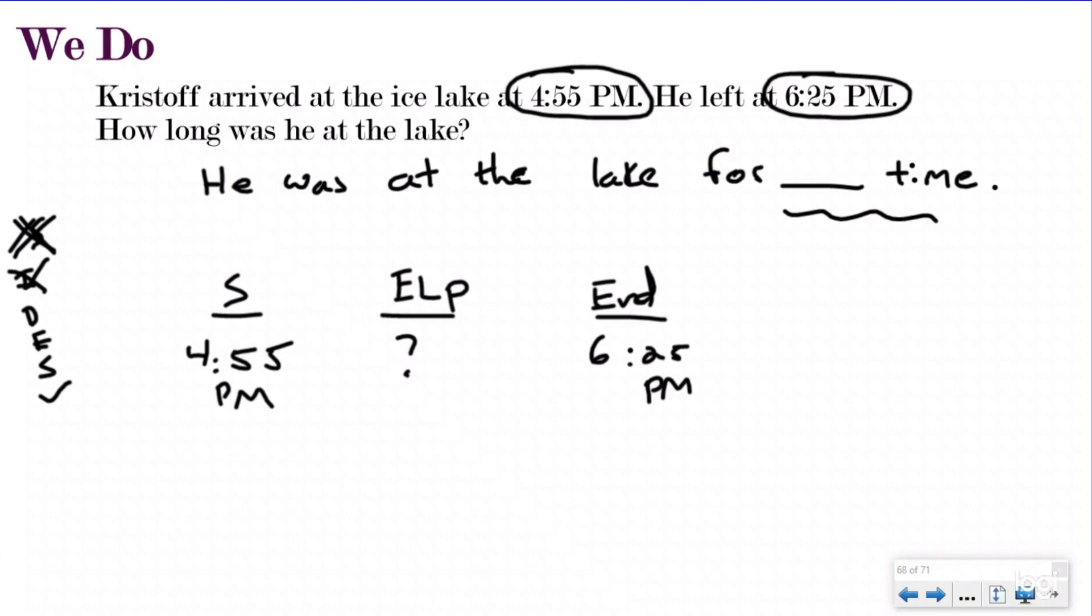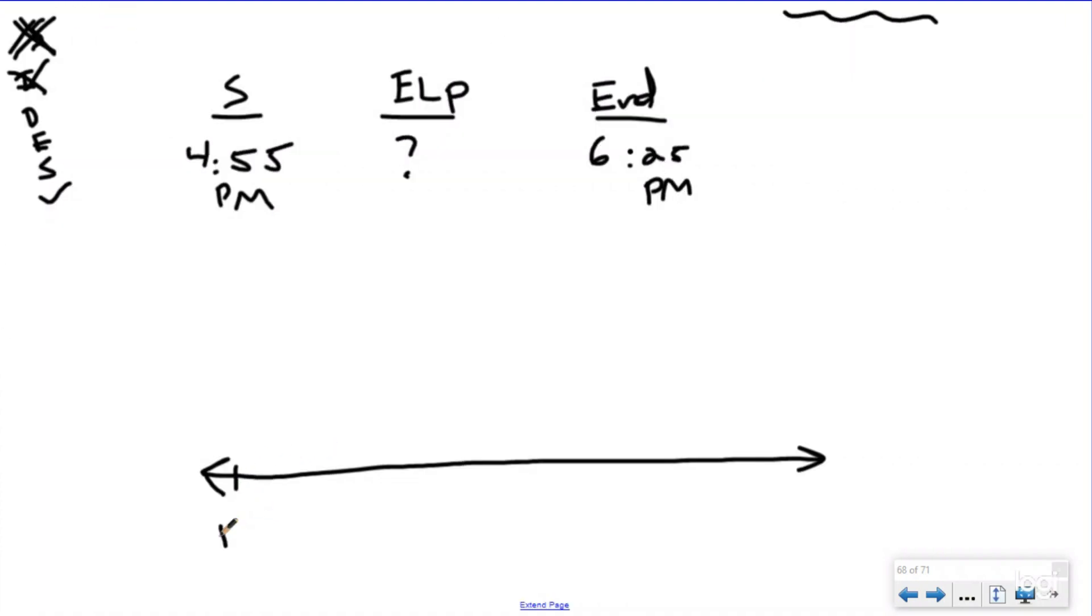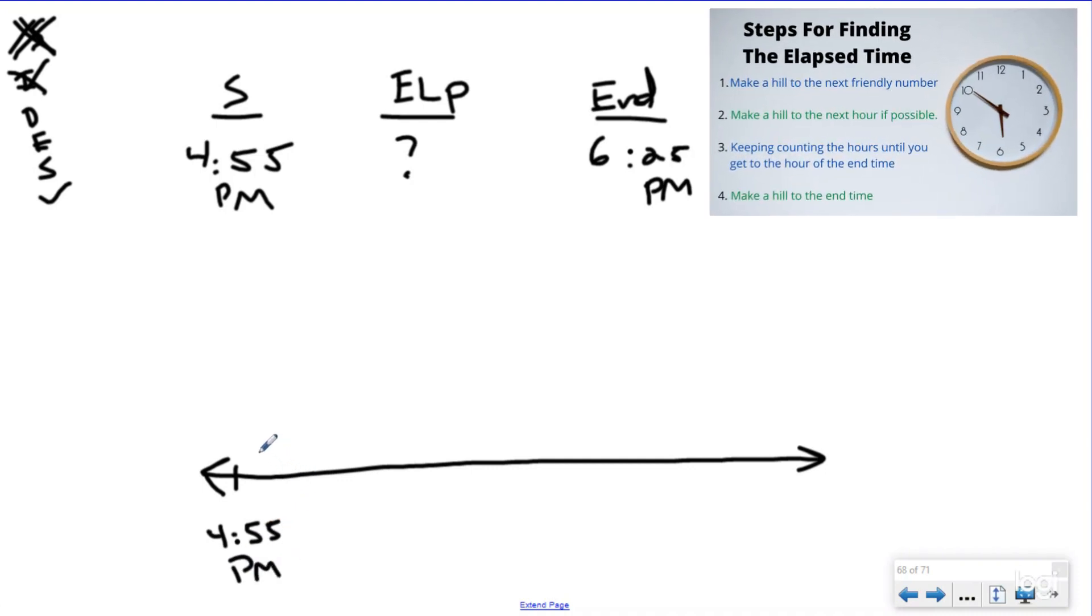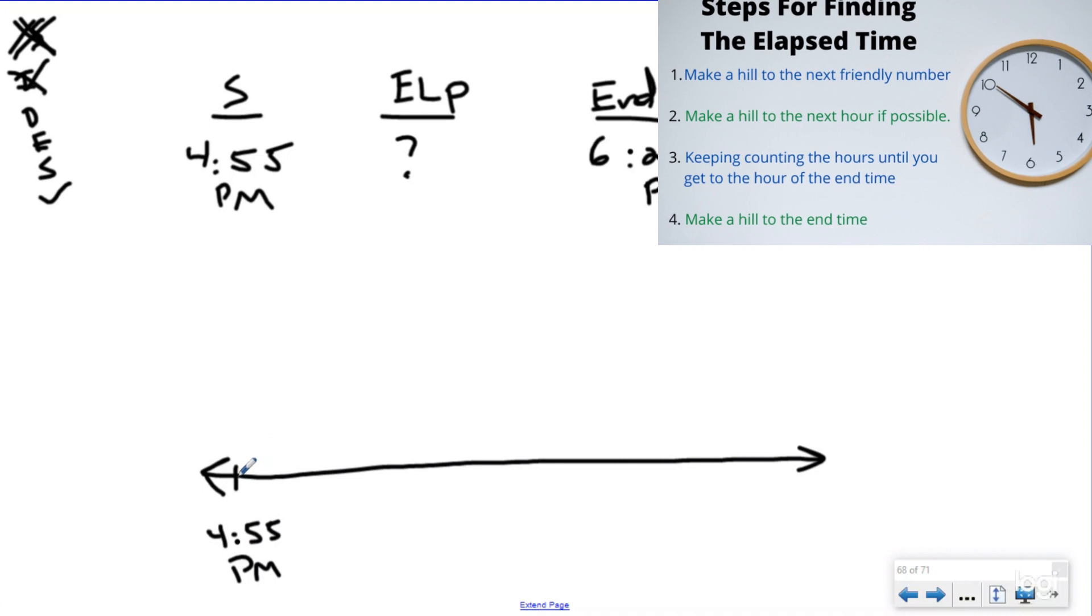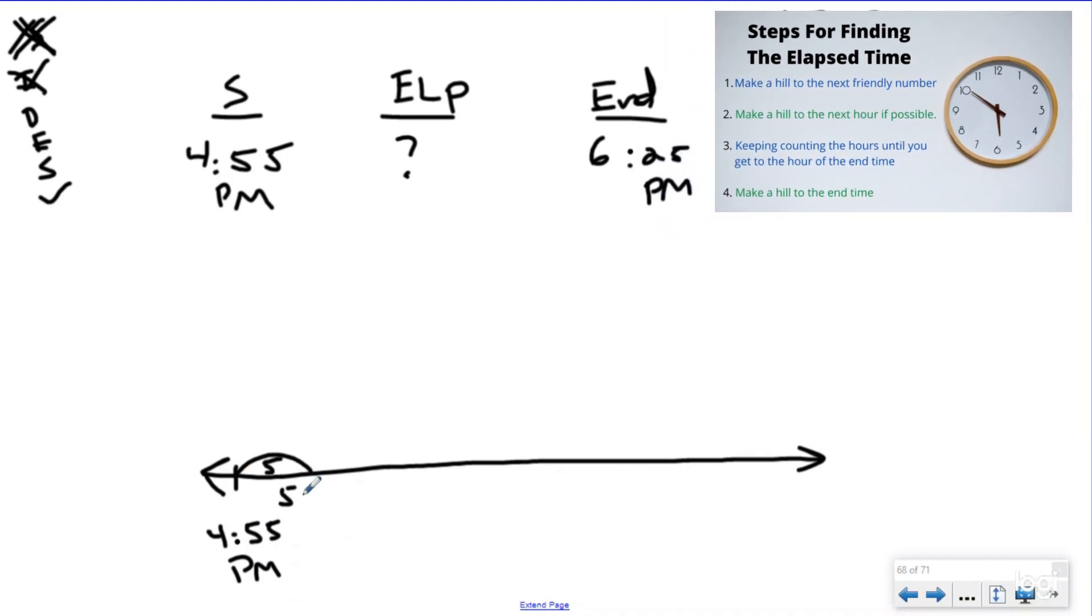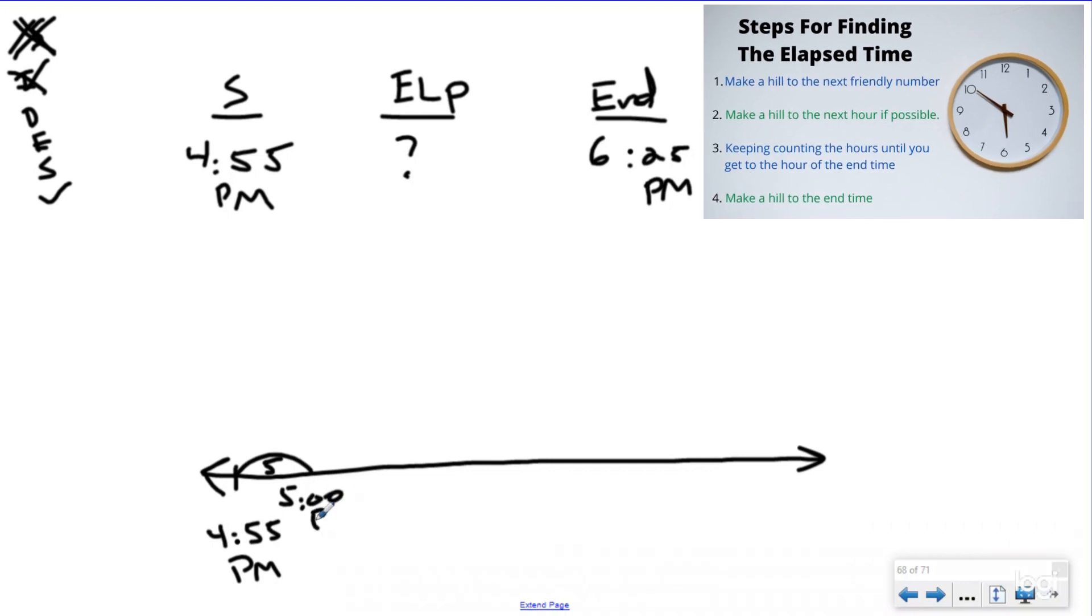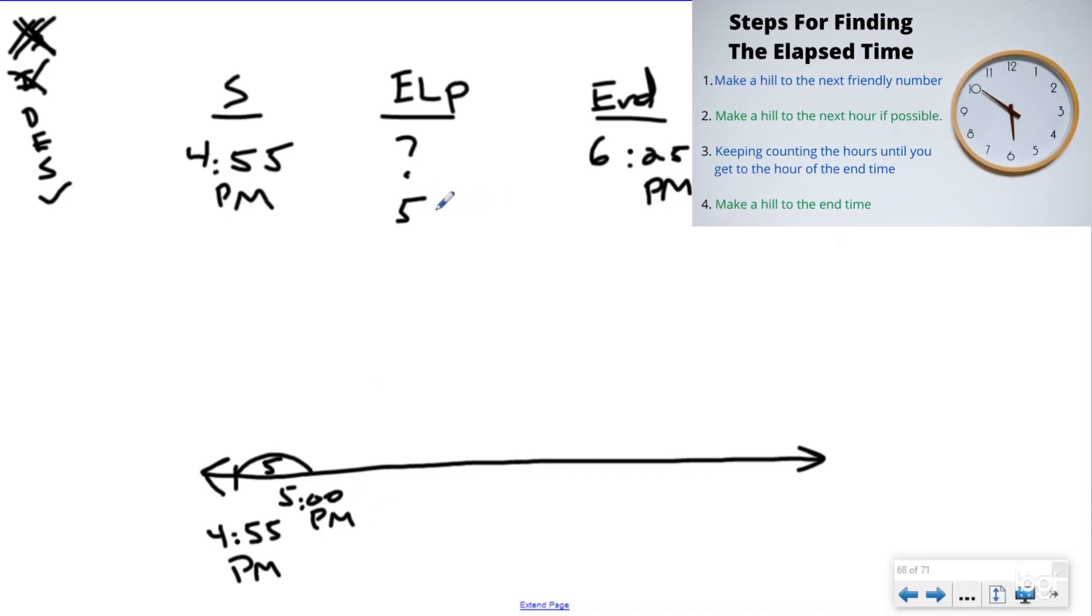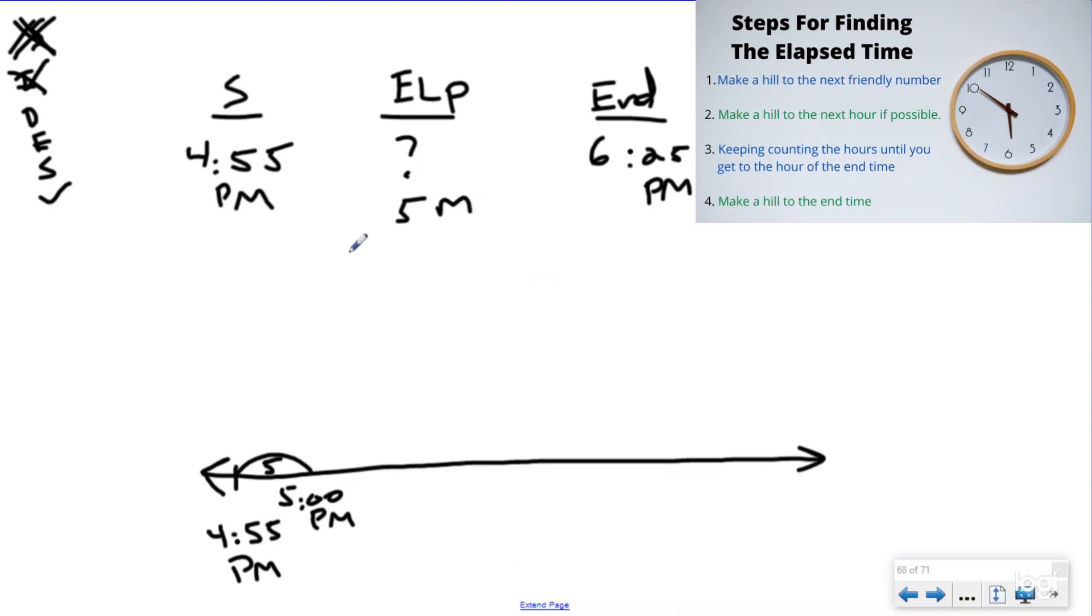So now I've identified, I've started to develop my plan. I need to solve this with my timeline. So I'm going to put my start time on there, 4:55 p.m. And the first thing I want to do is I want to get to the first friendly number. So actually, that's in one step. Because if I add a hill of five minutes, that takes me to 5 o'clock p.m. So that one is pretty easy. And now don't forget, you need to add your five minutes to the time to your elapsed time. So now I know my end time is 6:25. So I'm going to add my mountain here. And if I add five plus one, obviously, that's going to be 6 p.m.